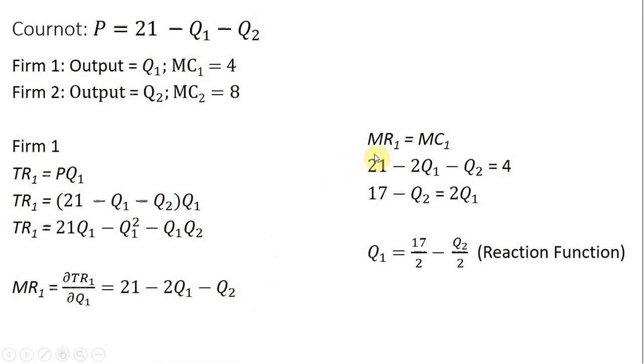The next step is setting Firm 1's marginal revenue equal to its marginal cost, where Firm 1's marginal cost is constant at $4. We're going to simplify this by solving for Q₁. Dividing everything through by 2 leaves us with Firm 1's reaction function, and we will graph this in a moment.